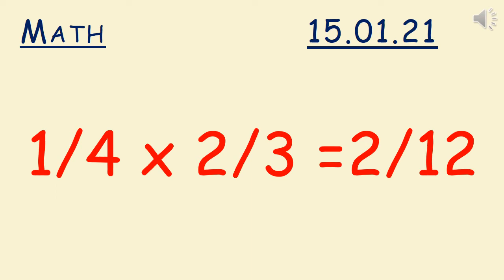So you should have got the answer 2/12 because 1/4 of 2/3 equals 2/12. Remember, we start with the numerators: 1 × 2 = 2. And then we move to the denominators: 4 × 3 = 12, giving us 2/12.